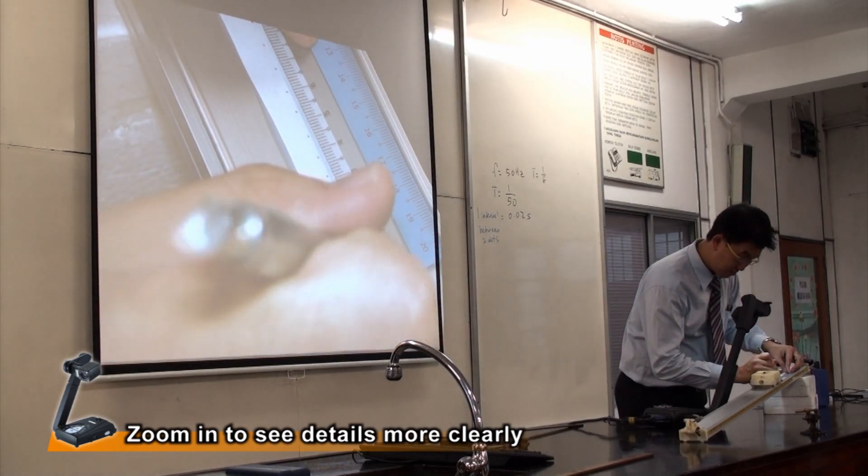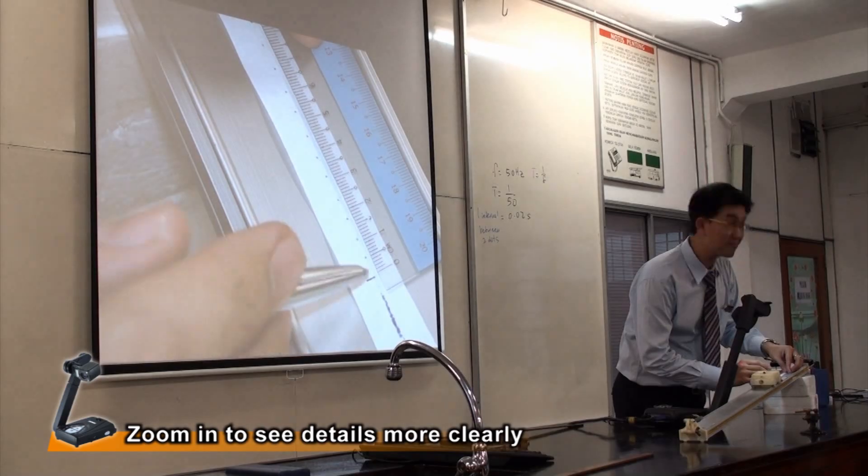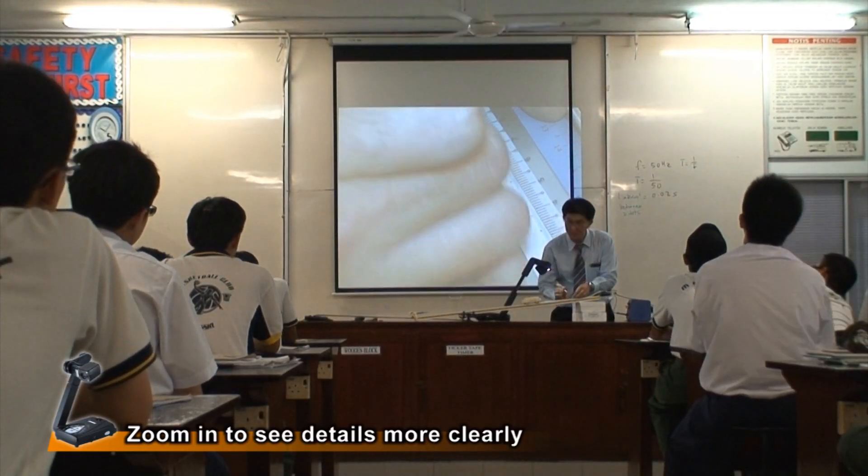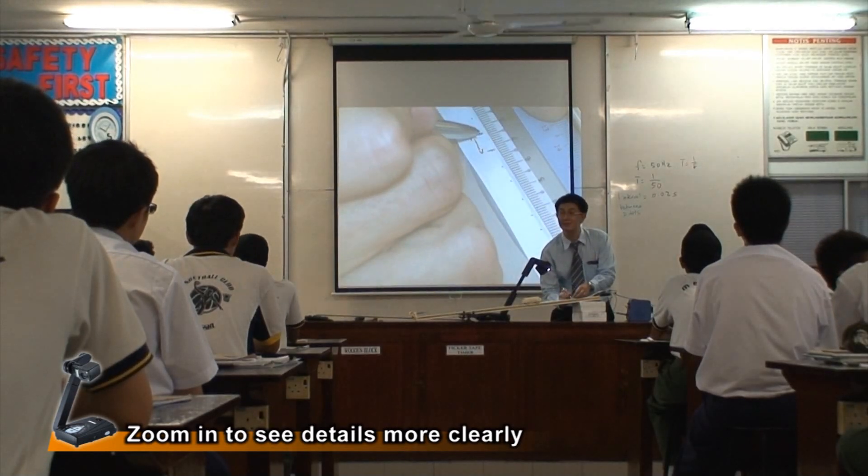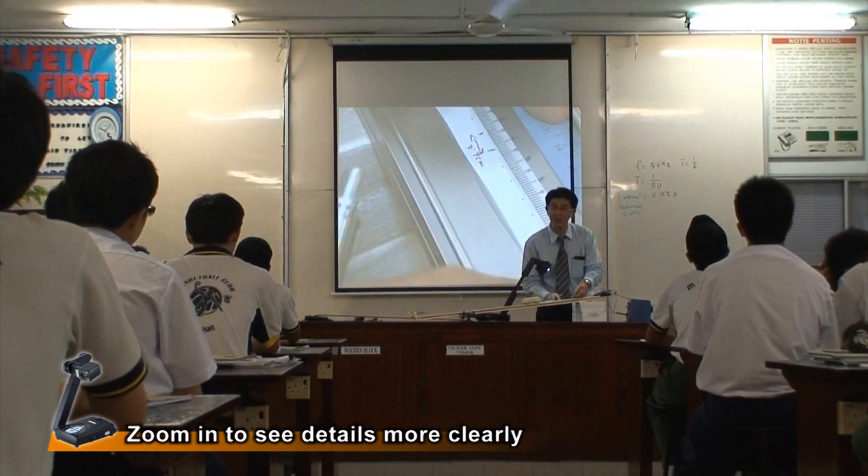So from there, from our eye, it's just seen as one dotting line. But from visualizer, it helped to enlarge ruler to compare with the measurement of the ticker tape. So it helped a lot because the student doesn't need to come out in front to get involved. It's just the teacher can show visualizer and project it.